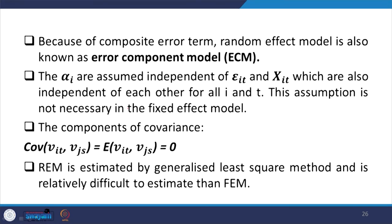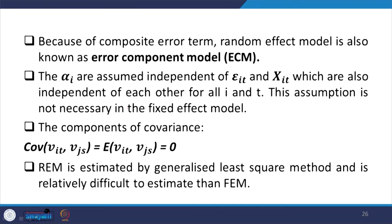Alpha_i is assumed independent of the error term and the explanatory variables, which are also independent of each other for all i and t. This assumption is not necessarily required in the fixed effect model. The covariance of the variance components is assumed to be 0. The random effect model is estimated by the generalized least squares method — GLS — and is relatively more difficult to estimate than the fixed effect model.